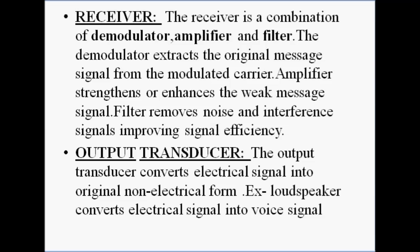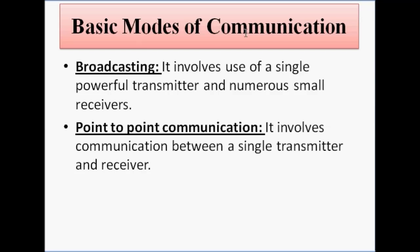These are the basic elements of communication. Next are the basic modes of communication. There are basically two modes: first is broadcasting, which involves a single powerful transmitter transmitting signals to numerous small receivers — it is a one-to-many form of communication. Next is point-to-point communication, which involves communication between a single transmitter and a single receiver — it is one-to-one communication. So we have discussed introductory basic concepts of communication: the basic definition, the blocks or elements of a communication system each in detail, and the basic modes of communication.